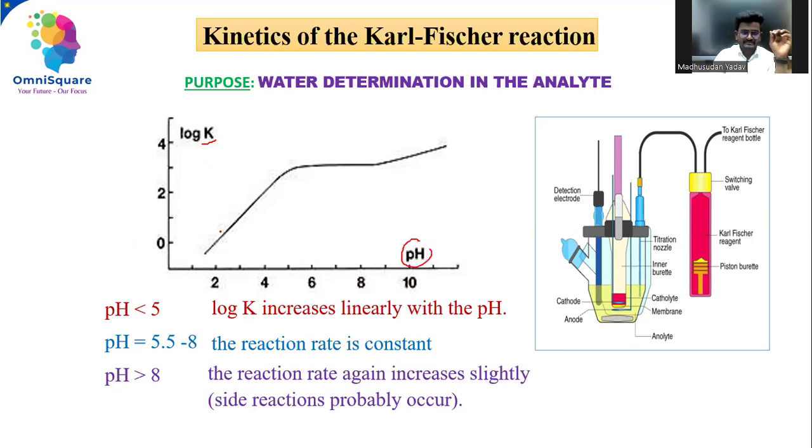In the beginning, as pH changes, the titration curve, the rate constant K, is also slowly increasing.